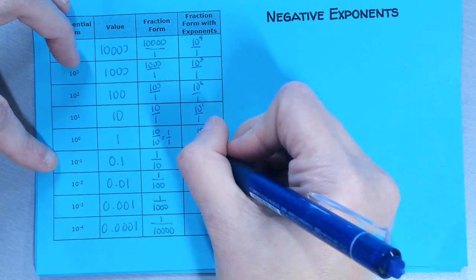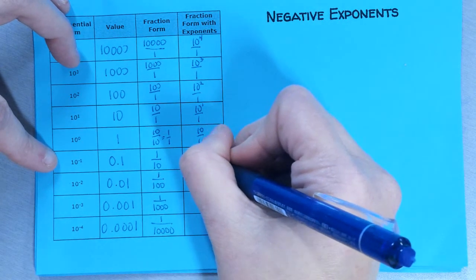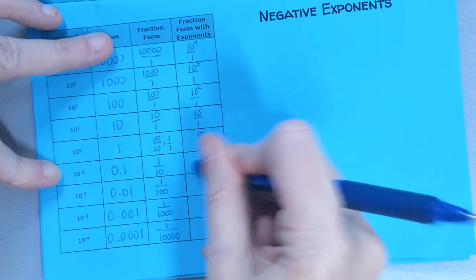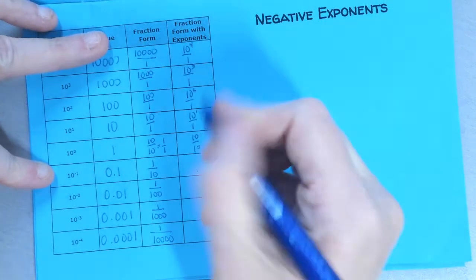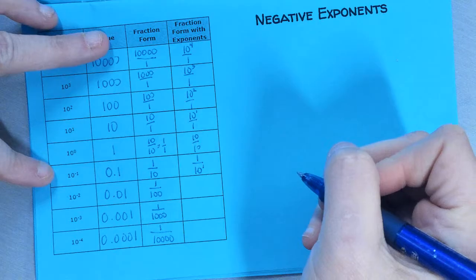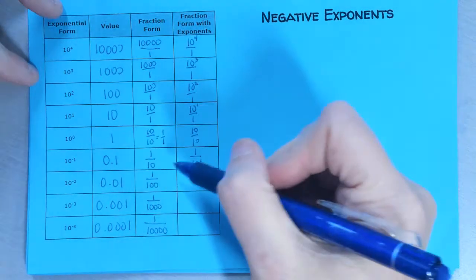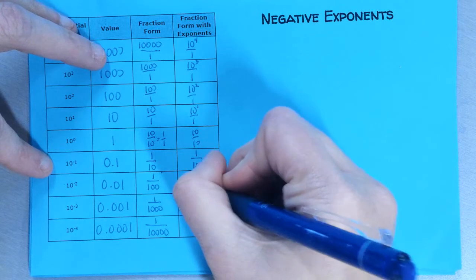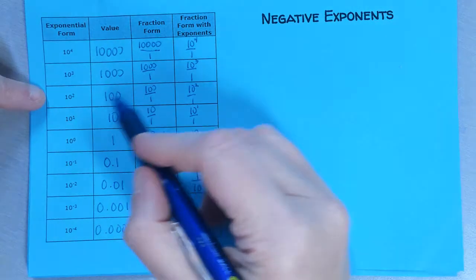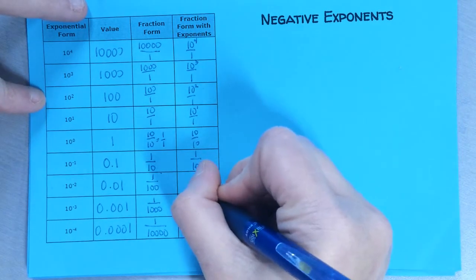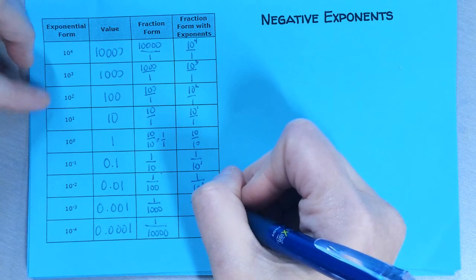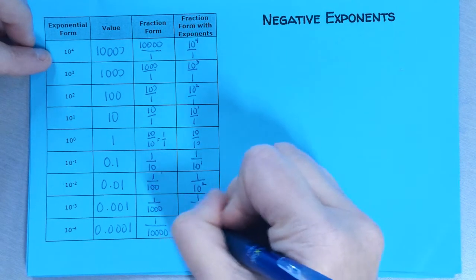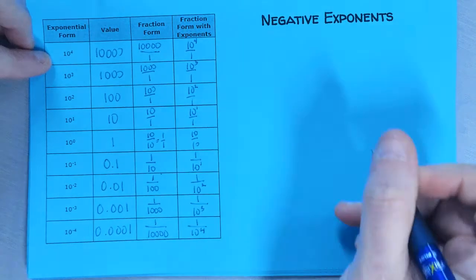10 to the 0 is 10 over 10. 10 to the negative 1 is 1 over 10 to the first, right? Because 10 is 10 to the first here. 1 over 100 would be 1 over 10 squared. 1 over 1,000 would be 1 over 10 to the third. And 1 over 10,000 would be 1 over 10 to the fourth.